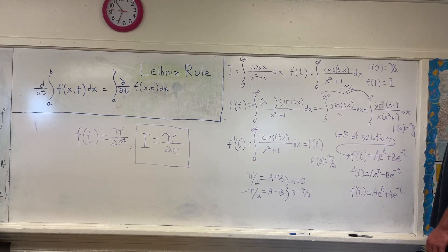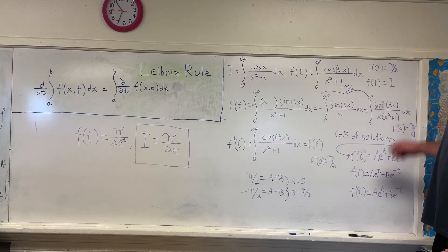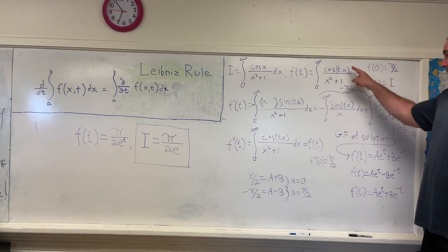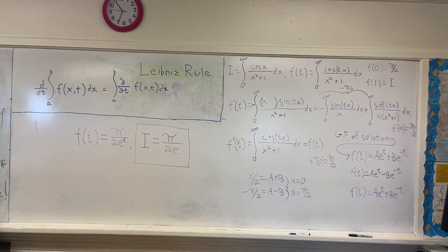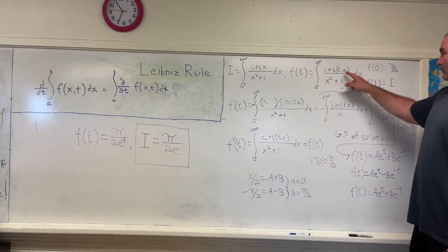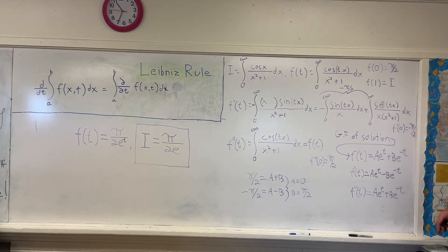That function of t is the integral from 0 to infinity of cosine tx over x squared plus 1 dx. Very familiar process. We're going to find some values for that at different points. Notice that f evaluated at the point 0, where t is equal to 0, gives you pi over 2. Because that'll give you cosine of 0, which is 1.